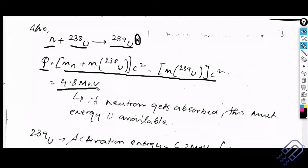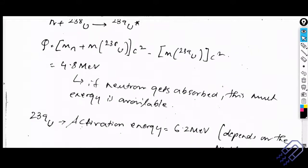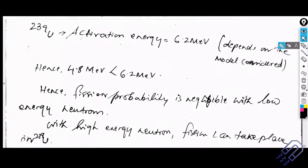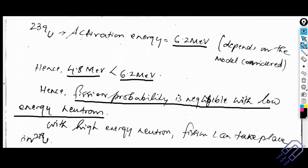You don't need to redo the calculation — just remember that the Q-value for uranium-239 formation is 4.8 MeV. Now the activation energy for uranium-239 is higher; according to the model, the upper range is 6.2 MeV. Since the Q-value of 4.8 MeV is less than the activation energy of 6.2 MeV, uranium-239 does not have sufficient energy to overcome the potential barrier. Hence, the fission probability is negligible with low-energy neutrons.